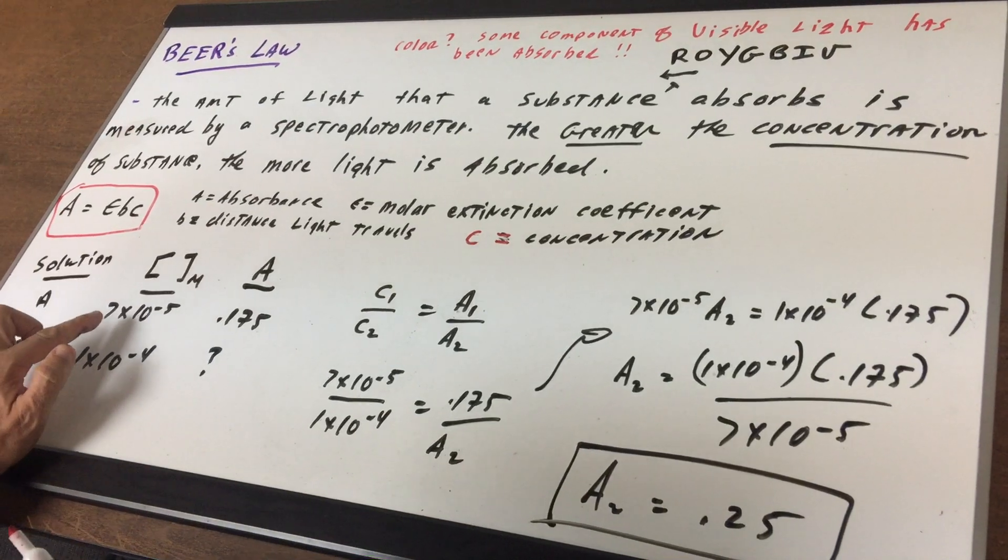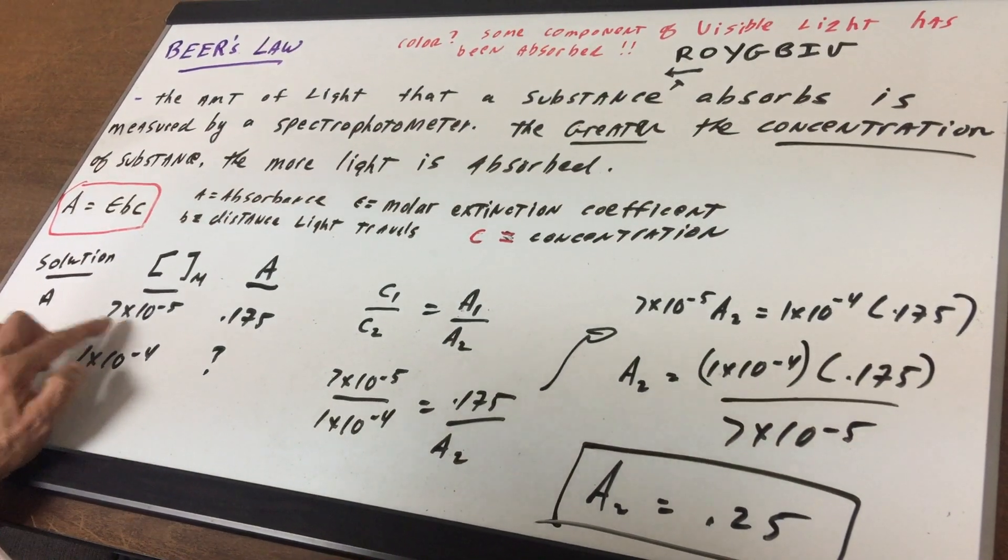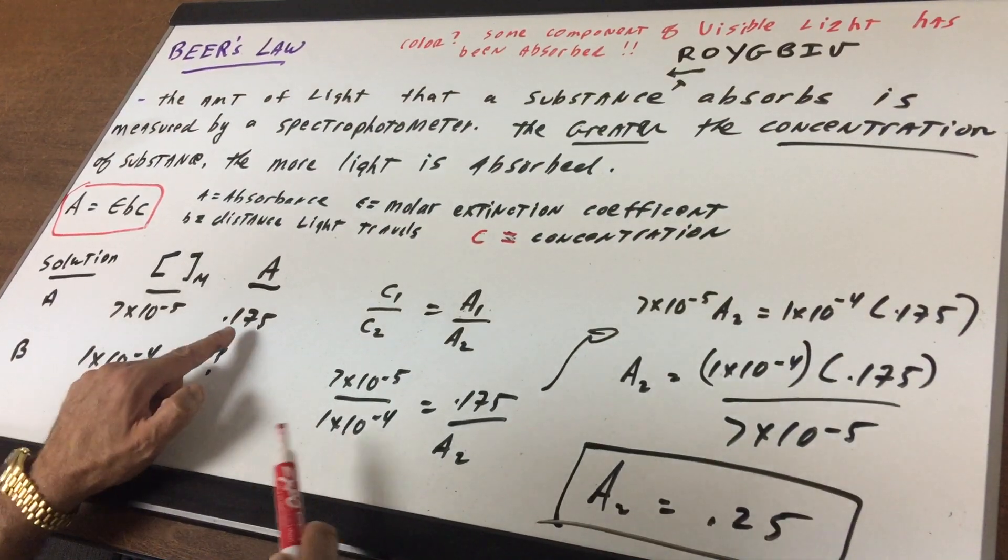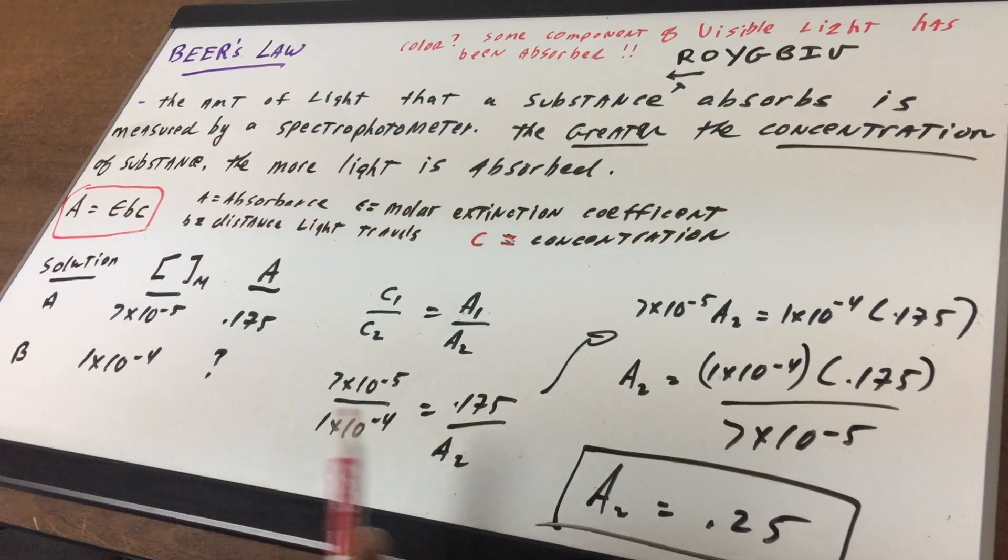Let's plug in. The first concentration I see is 7×10^-5. The next concentration C2 is 1×10^-4. The first absorbance was 0.175 and I'm going to solve for A2.